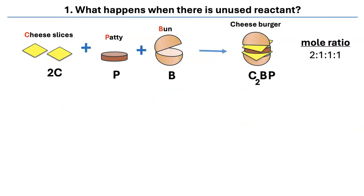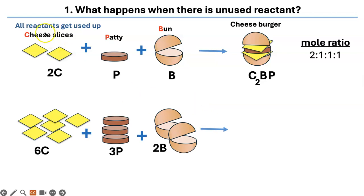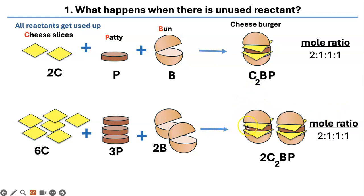Let's look at a simple reaction. You are making cheeseburgers, actually double cheeseburgers. You are using two cheeses, one patty and one bun to make your C2BP cheeseburger. So the mole ratio would be 2:1:1:1 as shown over here. Say your dad left you these ingredients and asked you to make double cheeseburgers. How many can you make? Yes, you can only make two. You use the same mole ratio as before, and you use up all of the hamburger buns.